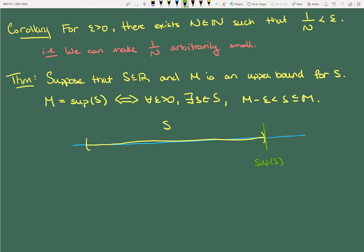What this theorem says is: if the supremum were to hold its arm out to the left a little bit — to M minus epsilon — it's going to be able to grab something in S. The idea of being the least upper bound is that you're snug against the set. If M holds its arm out, because it's right snug against the set, it must grab something in S.